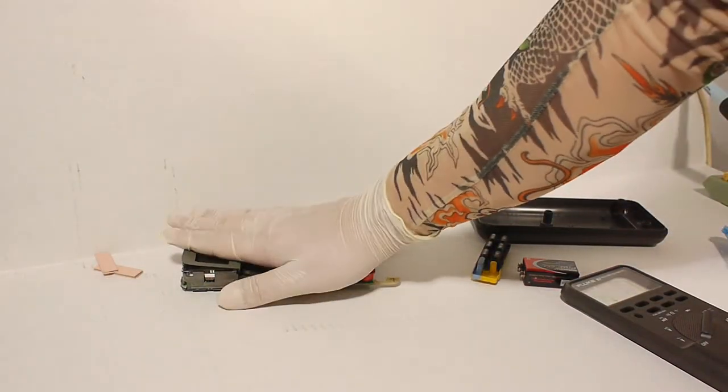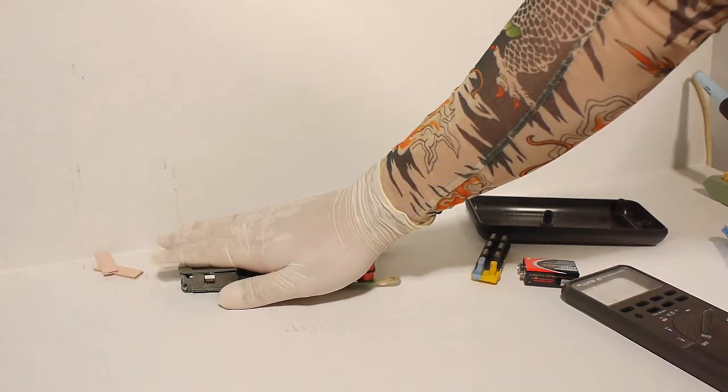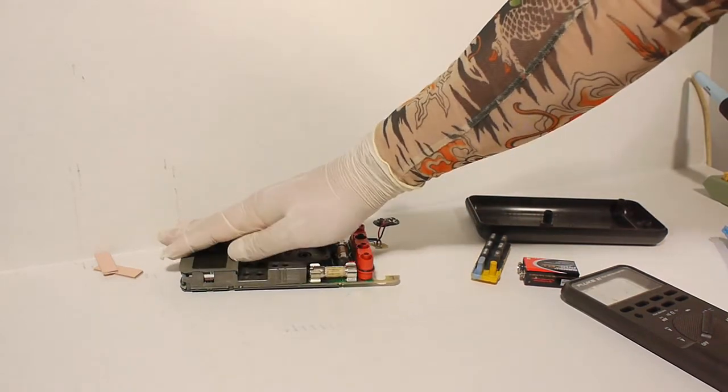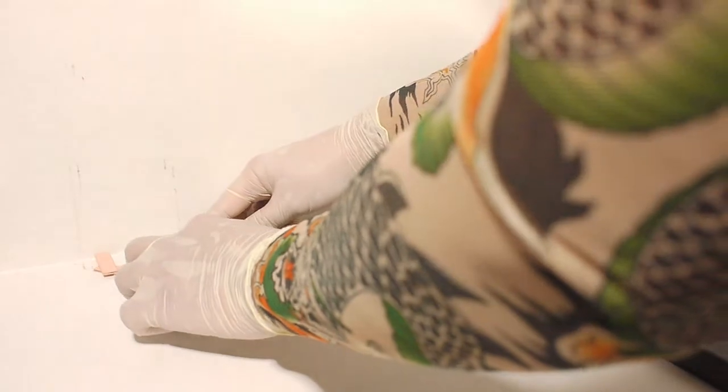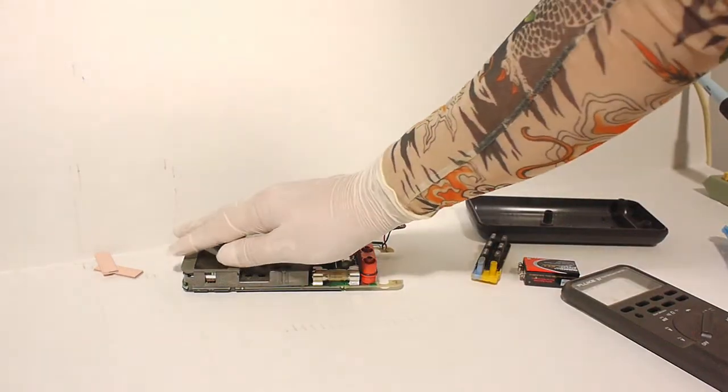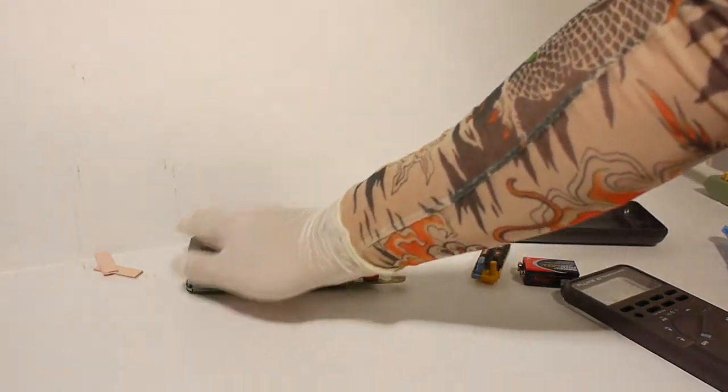Step 12: reattach the LCD mask. Start from the bottom and then apply even pressure along the top until it snaps back into place. You want to be careful not to break your LCD display. It is made of glass.